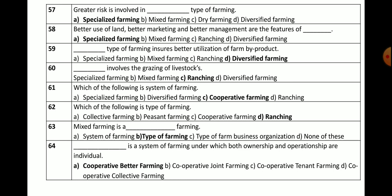Question number 60: Which type of farming involves the grazing of light stocks? Options: specialized, mixed, ranching, or diversified. The correct answer is ranching — ranching farming involves the grazing of light stocks.